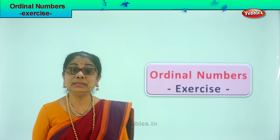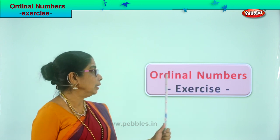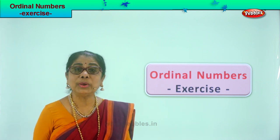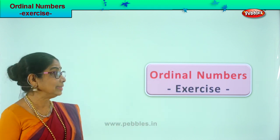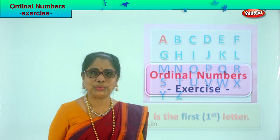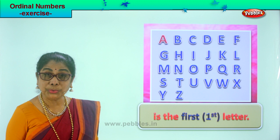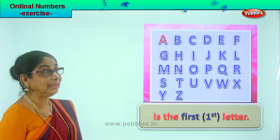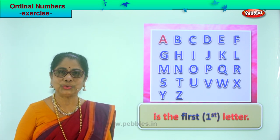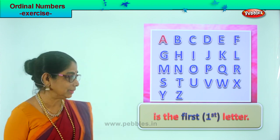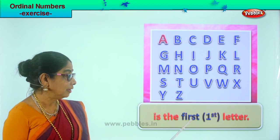Hi children, we learned ordinal numbers. Now to remember the ordinal numbers, let's do a few exercises. Look — you have the letters from A to Z, but you must know where each letter stands. Now look at letter A. Is it first or last, second or fifth, tenth or twentieth? We are learning ordinal numbers. Letter A is the first letter.